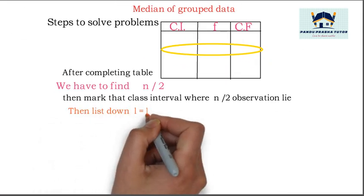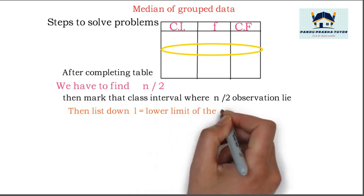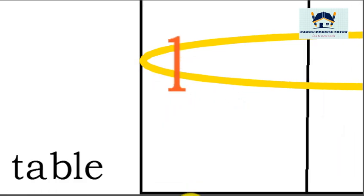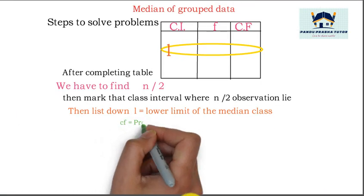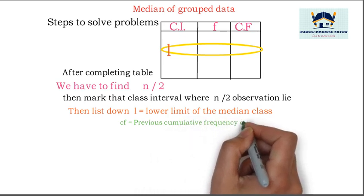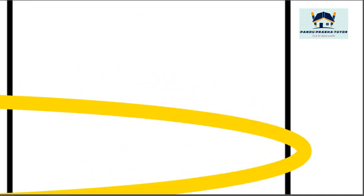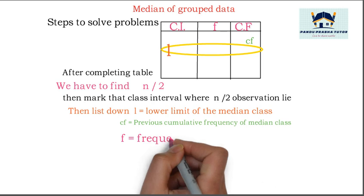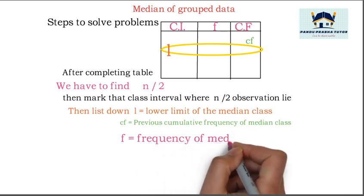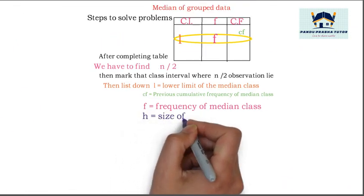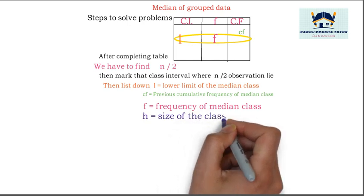Then list down the required values: l is equal to the lower limit of the median class, cf is equal to the previous cumulative frequency of the median class, f is equal to the frequency of the median class, and h is equal to the size of the class interval.